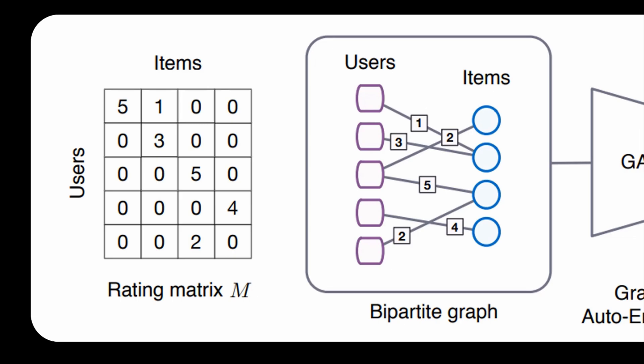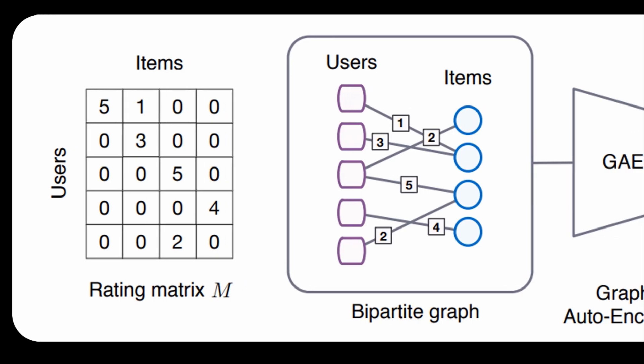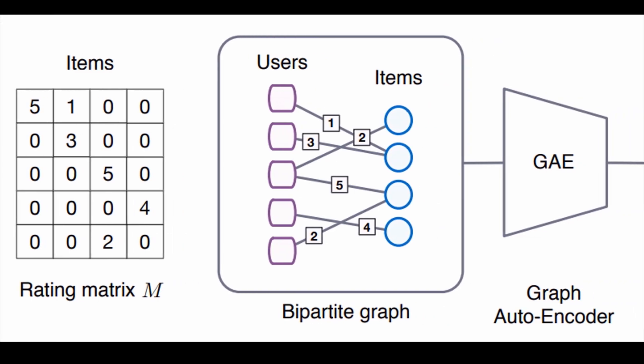Each user and item is represented by a feature vector. The heart of the model is a graph autoencoder which has the task to compress the edge information in such a way that it is possible to reconstruct it from the compressed representation.